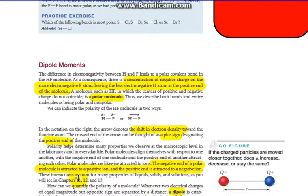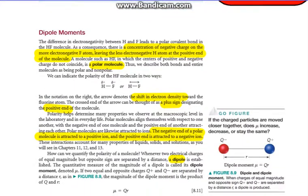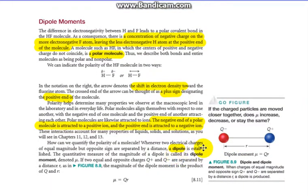These interactions come from properties of liquids, solids, and solutions. How can we quantify the polar molecule? Whenever two electrical charges of equal magnitude at opposite sign are separated, we refer to that as a dipole. Polar molecules have dipoles set up, two charges separated at a distance. That's what a dipole is.